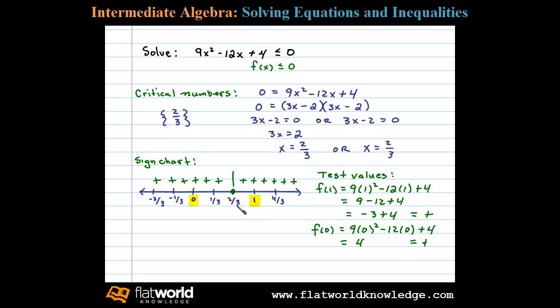Now we'll use the sign chart to answer the question. Now the question asks for what values, for what x values, is this quadratic less than or equal to 0? In other words, when is it negative or 0? From the sign chart we can see that it's really never negative, but it is equal to 0 actually at that one point there,